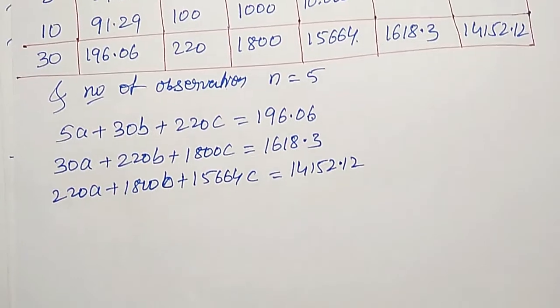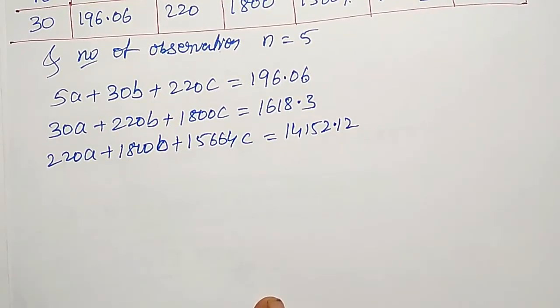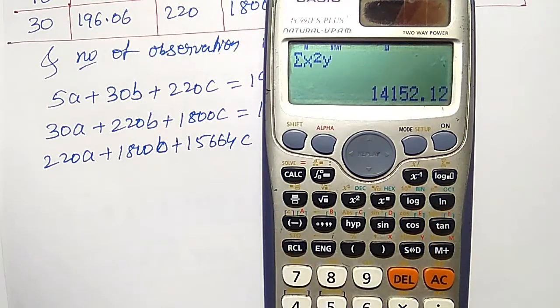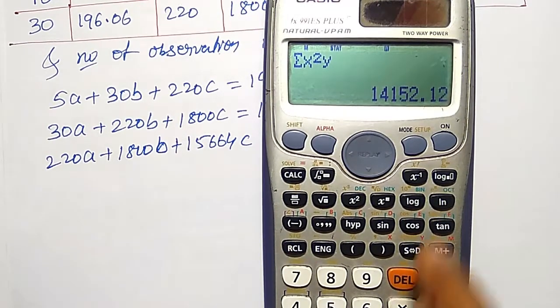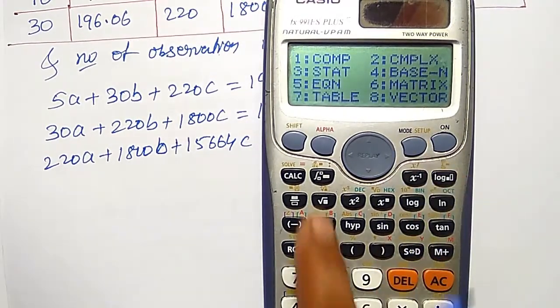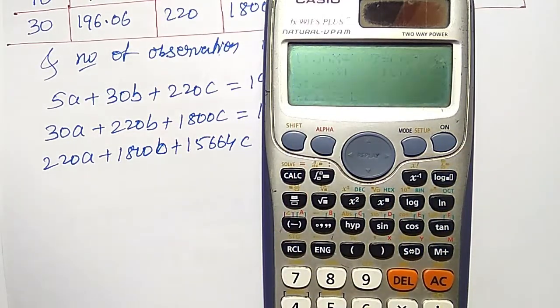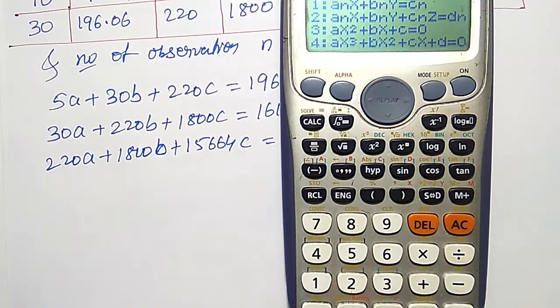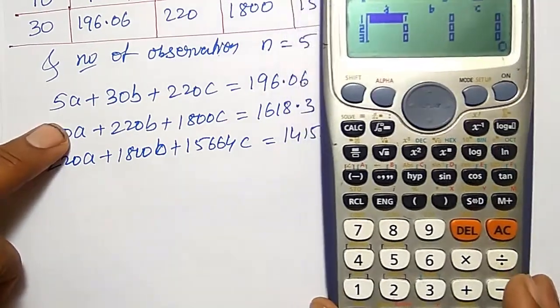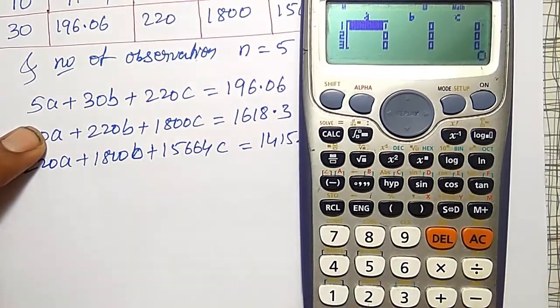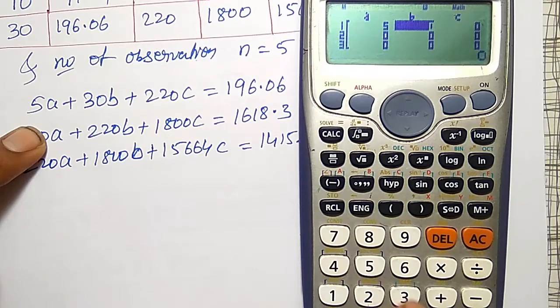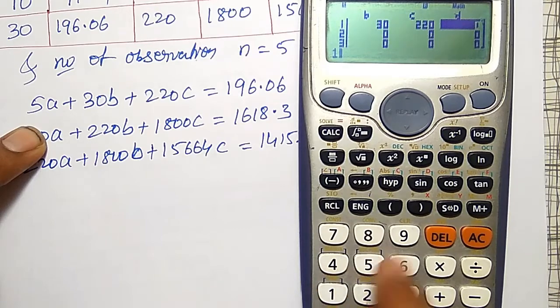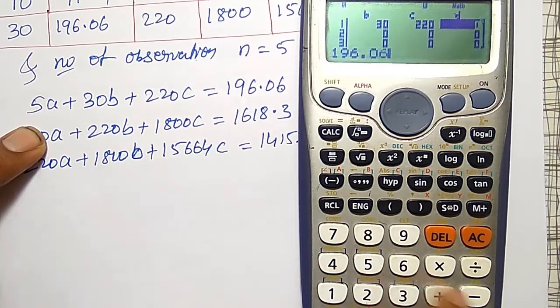To solve these three simultaneous equations, again I will use the calculator directly so that you can save the time. In equation mode I have to go. Equation number 5. Three unknowns are there. Therefore, I will select the second option. In that, I will substitute the values.